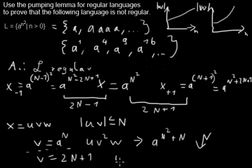Of course if I would now double that v, I would come to the next word. But when I now pump it down and say I want to have zero of that v, so I'm pumping down instead, then I would have a to the power of n squared minus 2n minus 1. So that is not the same as this one.